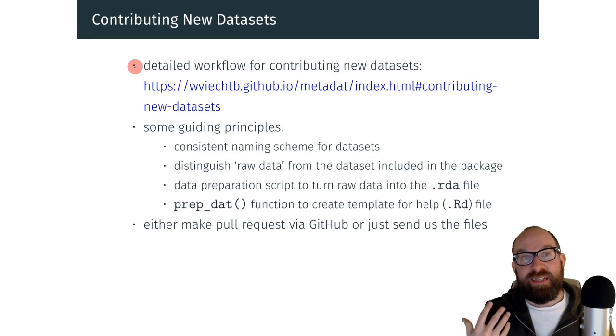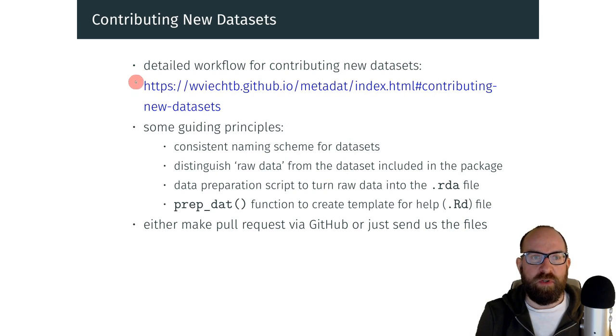Quite importantly, we want others to contribute new datasets to the package. So we have created a detailed workflow for doing so, which you can find under this link. Let me just describe some of the guiding principles here. First of all, we want the datasets to be named in a consistent manner. In addition, we want to make a distinction between the raw data and the data actually included in the package. Meta-analysis datasets are often very large, not so much in terms of the number of studies included, so the number of rows, but in terms of the amount of information that is extracted from each of these studies. Often we have many variables, but not all of these variables may be so interesting for inclusion in the package. So there should be a raw data file and a data preparation script that takes the raw data file and turns it into the R data file that is included in the package.